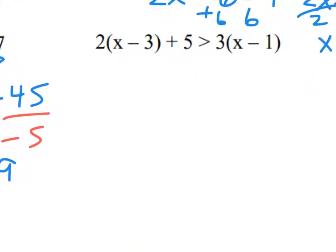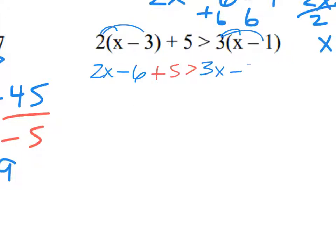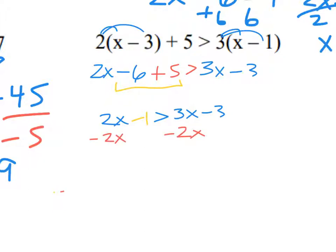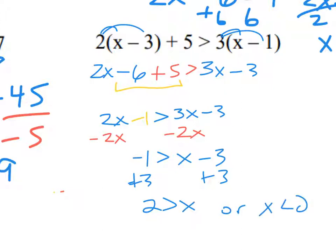For this next one, we're still going to start with distributing. I have two sets of parentheses to distribute, giving me 2x minus 6 plus 5 is greater than 3x minus 3. On the left side, I can combine negative 6 plus 5 to get negative 1. I like to move my variable first, so I move 2x, which leaves me with negative 1 is greater than x minus 3. Add 3 to both sides: 2 is greater than x. Or equivalently, x is less than 2.